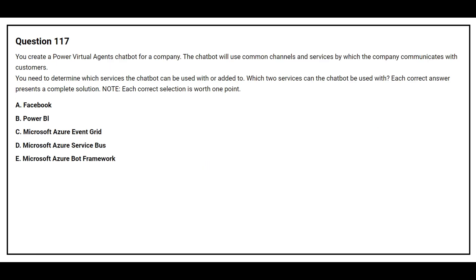Question number 117. You create a Power Virtual Agents chatbot for a company. The chatbot will use common channels and services by which the company communicates with customers. You need to determine which services the chatbot can be used with or added to. The options are: Option A: Facebook, Option B: Power BI, Option C: Microsoft Azure Event Grid, Option D: Microsoft Azure Service Bus, Option E: Microsoft Azure Bot Framework. The correct answers are Option A: Facebook and Option E: Microsoft Azure Bot Framework.